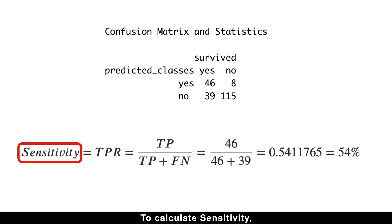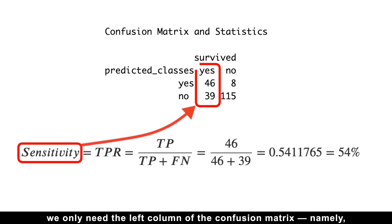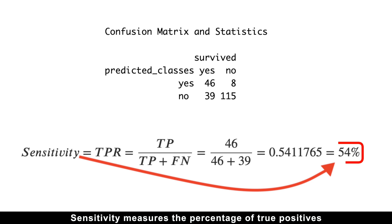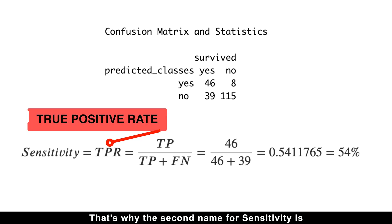To calculate sensitivity, we only need the left column of the confusion matrix. Namely, we divide the true positives by all actual positive cases. In other words, sensitivity measures the percentage of true positives that the model correctly identifies. That's why the second name for sensitivity is true positive rate.